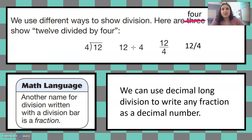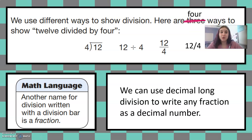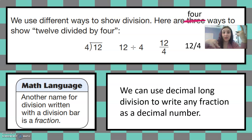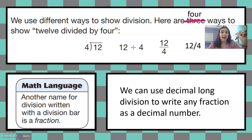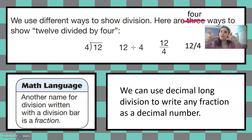We use different ways to show division. Here are four ways to show 12 divided by four. First there's the fraction box, which we see a lot when we use long division. 12 is what we are dividing, so 12 is the dividend, and we're dividing 12 into four groups. Four is the divisor.